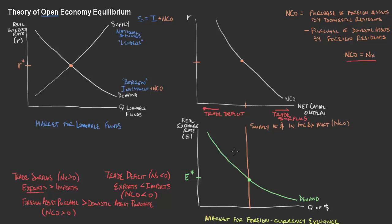The market for loanable funds sets the real interest rate in the economy. Given that real interest rate, we have a certain amount of net capital outflow, which gives us the supply of dollars in the foreign exchange market — that's the net capital outflow we have there.